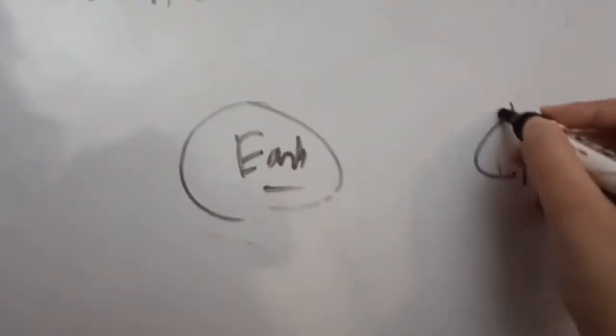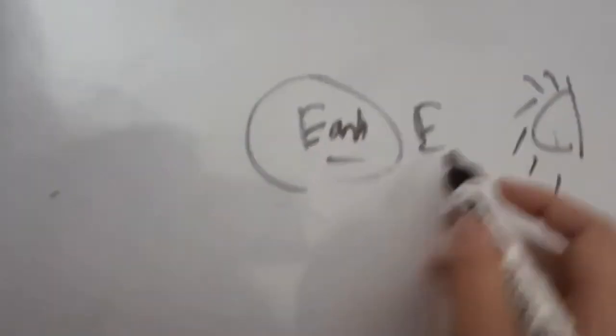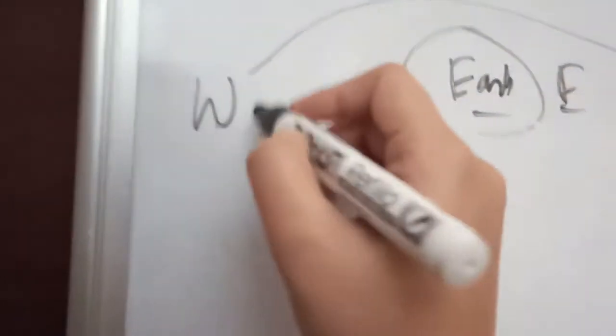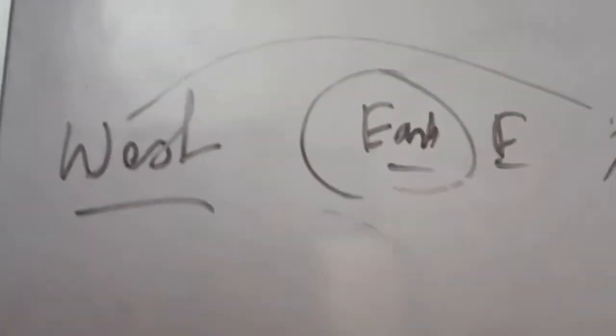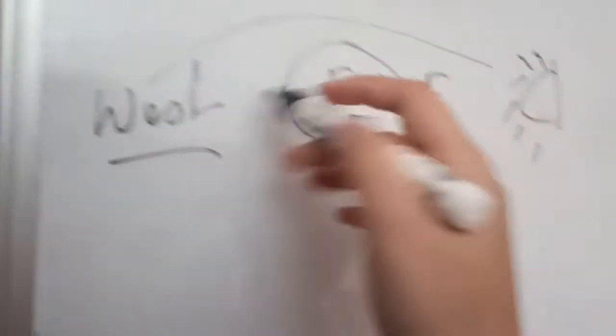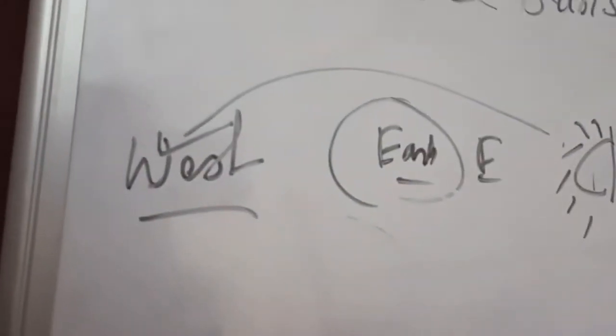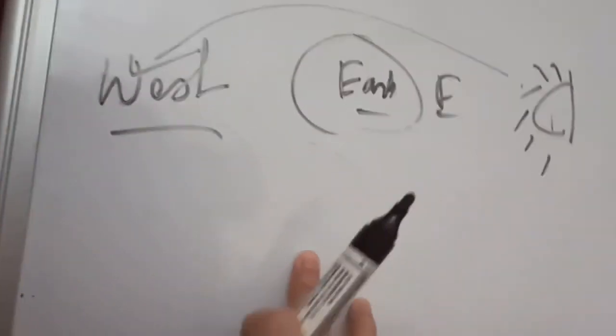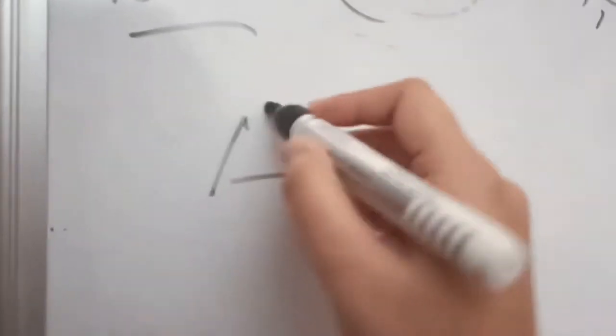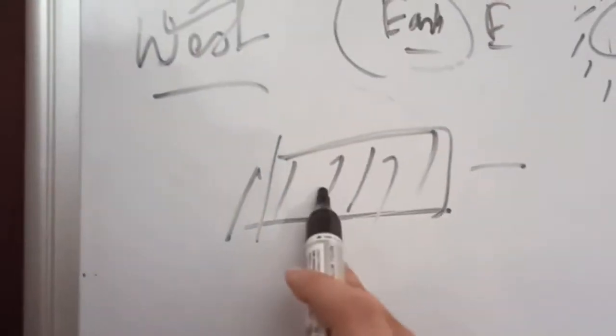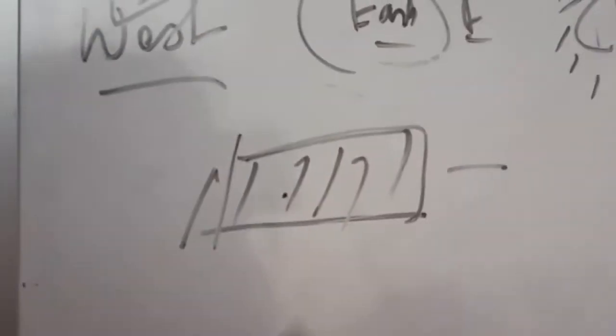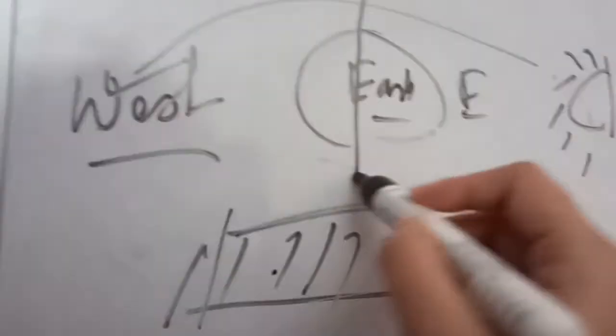By this we can understand that because of the rotation of the Earth, the sun rises in the east and sets in the west. This actually proves that the Earth is spherical in shape. If the Earth were flat like that, then all places on the Earth's surface would have gotten sunrise at the same point of time and sunset at the same point of time.